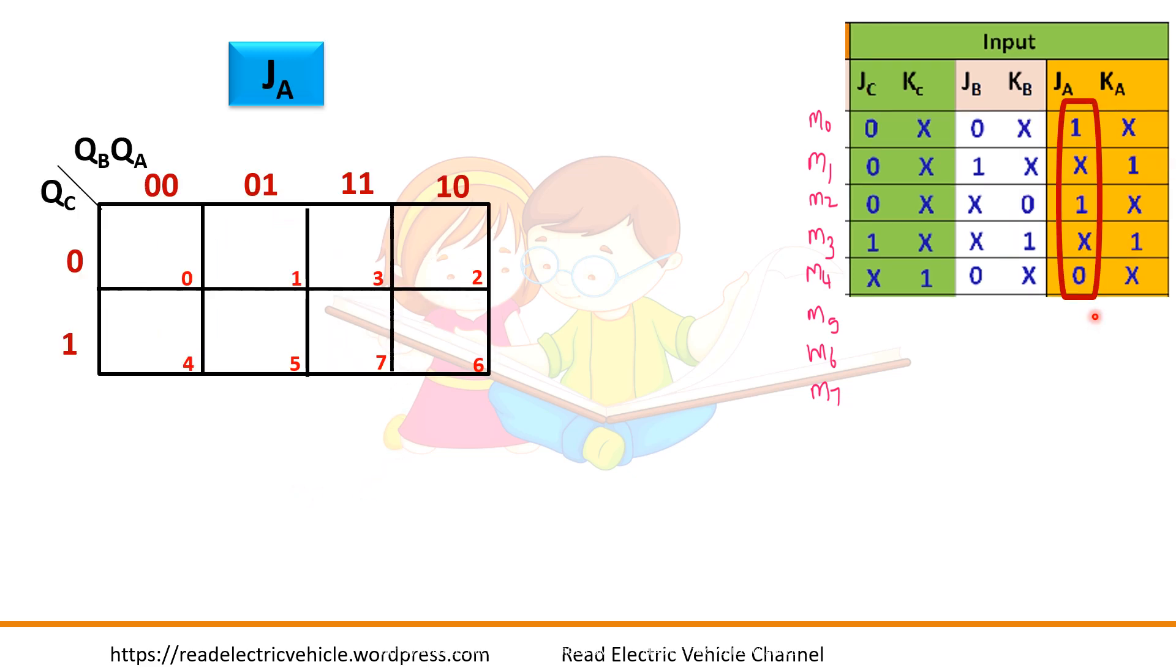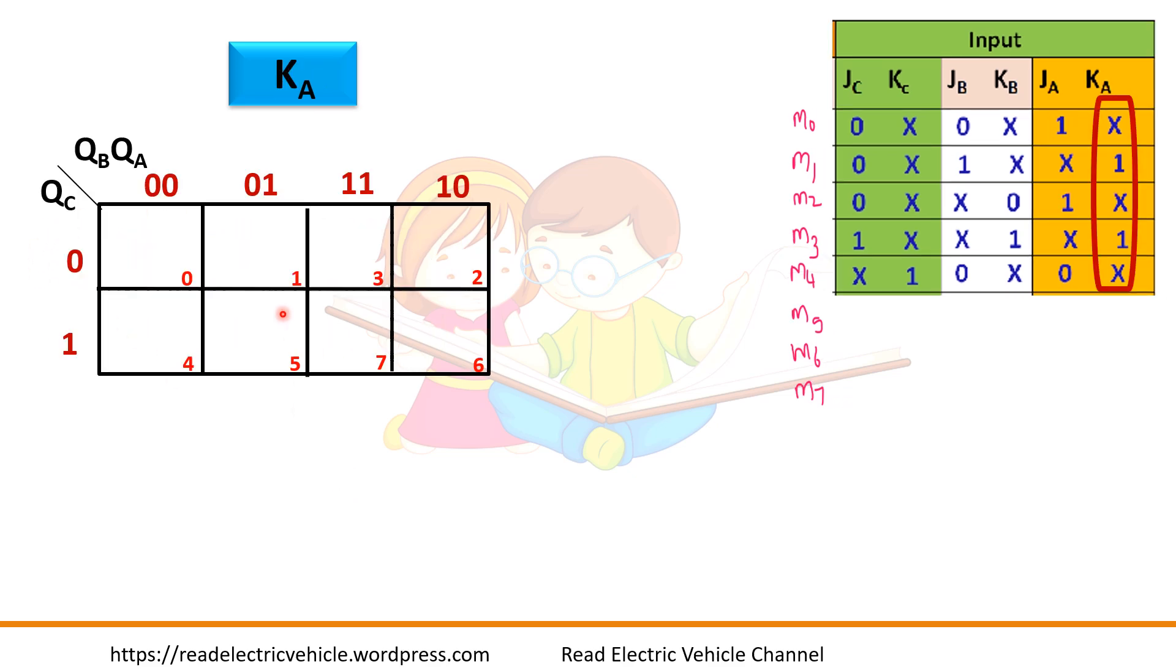Next we will do for JA. So here 1 and here 1 is there. So we can combine all the 4 together. JA is equal to QC bar. So here it is QC bar. For KA, there are no 0s, so KA is equal to 1.